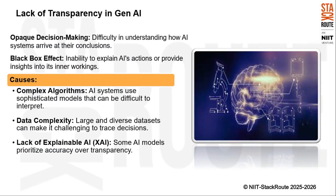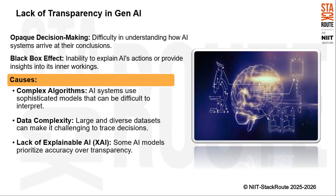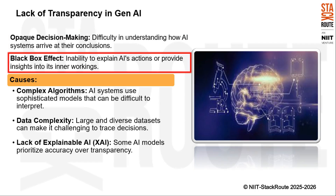We have opaque decision-making and the black-box effect under lack of transparency in Gen AI. Opaque decision-making refers to the difficulty we face in understanding how AI systems arrive at their conclusions — imagine trying to figure out how a complex machine operates without being able to see inside it. Closely related is the black-box effect, which describes the inability to explain AI's actions or provide insights into its inner workings: we can see the input and the output, but we cannot easily understand or interpret what happens in between.